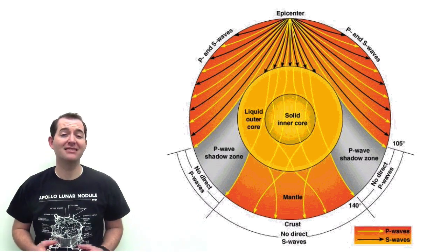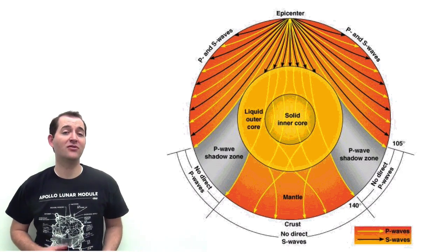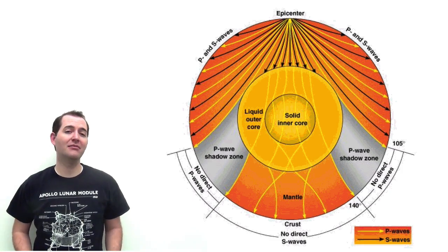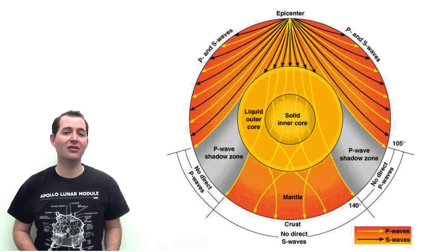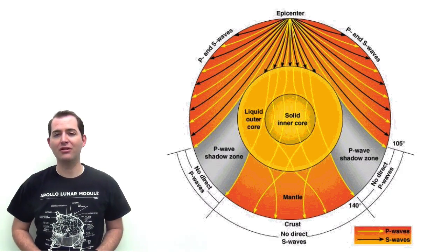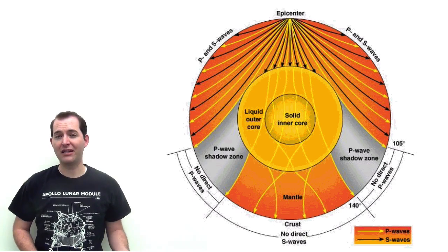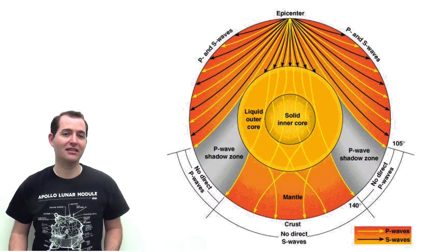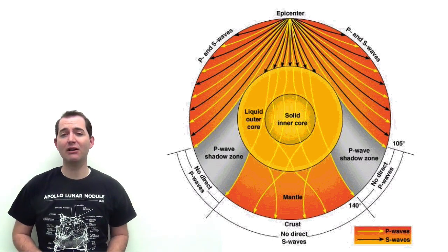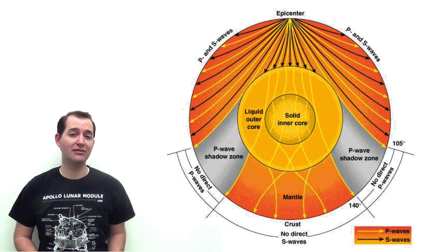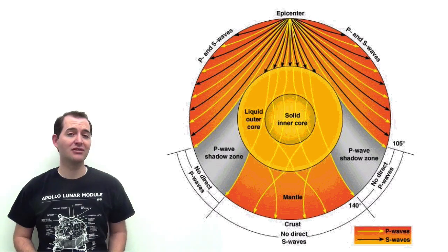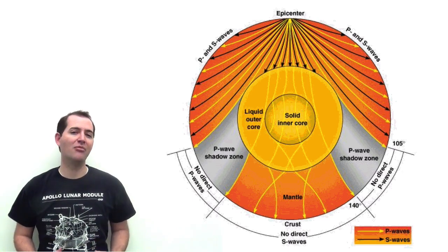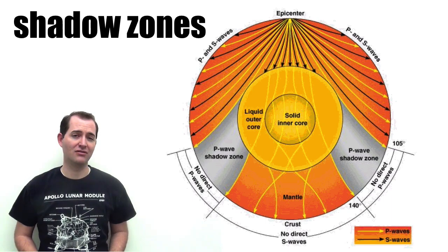When earthquakes happen, scientists can use the time it takes for P and S waves to reach other locations around the Earth to estimate the properties of the Earth between those two locations. The point where the earthquake originated, and the point where the earthquake waves are detected. Also, because S waves, or secondary waves, cannot travel through liquids, scientists are able to determine what the layers of the Earth are made of and how big they are through what are known as shadow zones.